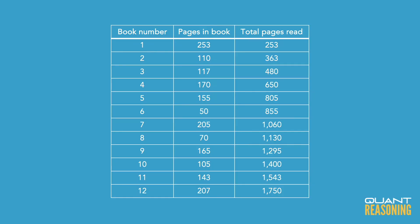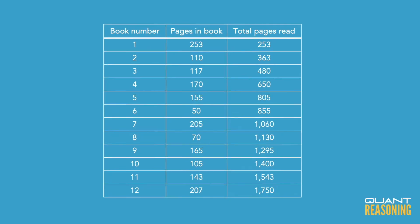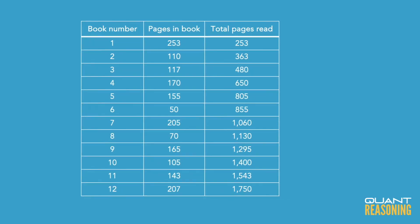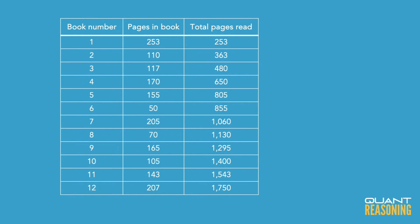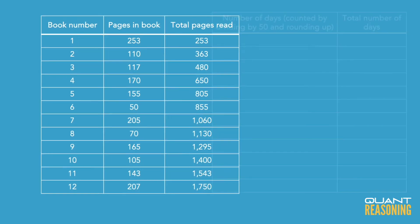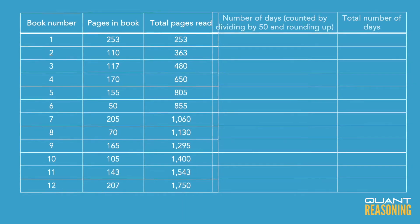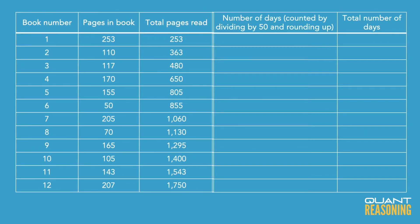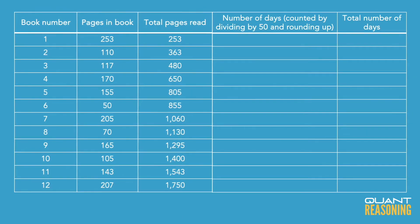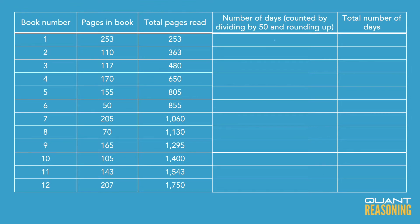On day one, we would say 50 goes into 253 five times with a remainder of three. So that's a total of six days for the first book.